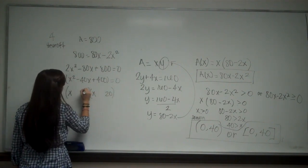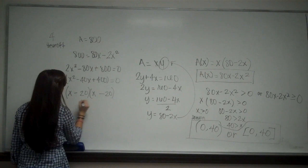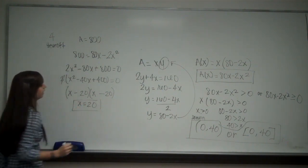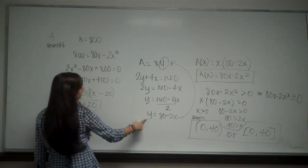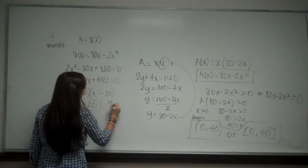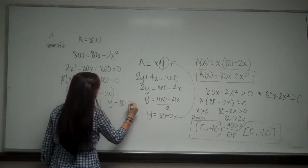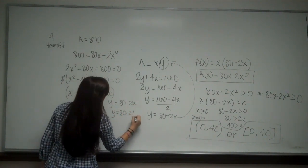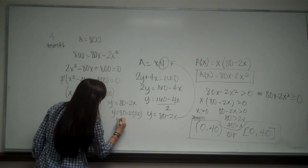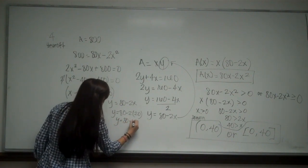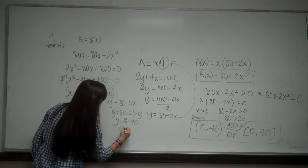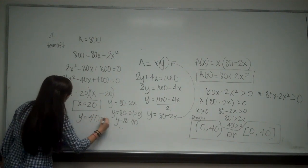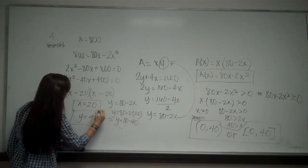Now this factors nicely. So 20, 20, minus. So x = 20. And now we also need to find the y value. And we have an equation. So y = 80 - 2x. Y = 80 - 2(20). Y = 80 - 40. And I'll write it up here. Y = 40.